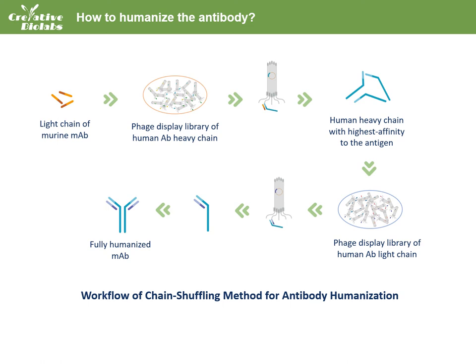After that, the heavy chain of the selected hybrid antibodies is replaced by heavy chains of the human antibody library. Subsequent screening of this secondary chimeric library will produce fully humanized antibodies. Since phage display library screening mimics the in vivo antibody selection and evolution procedure, chain shuffling can result in humanized antibodies whose affinities are higher than that of the original antibody. Also, this sequential chain shuffling procedure can generate several versions of humanized antibodies with different sequences.